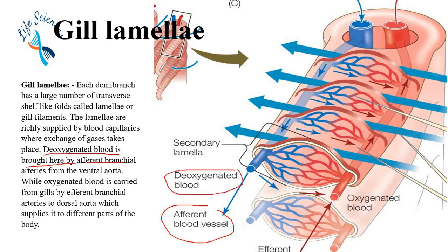These afferent vessels carry deoxygenated blood. They are arteries from the ventral aorta, while oxygenated blood is carried from the gills by the efferent branchial arteries to the dorsal aorta, which supplies blood to different parts of the body.